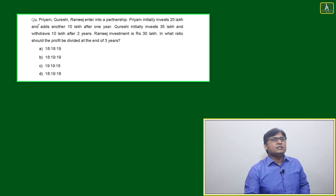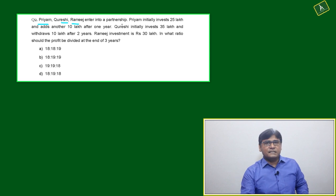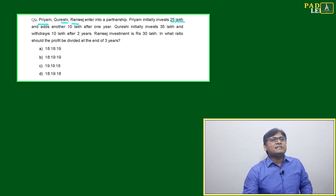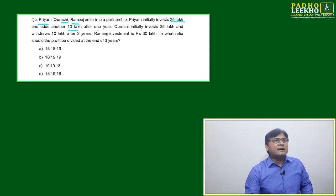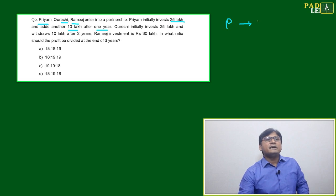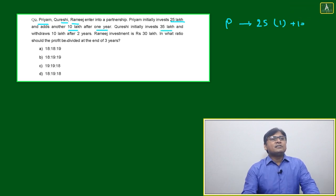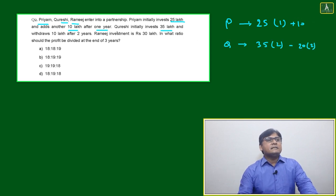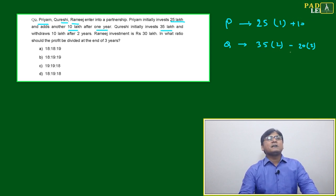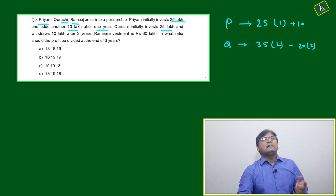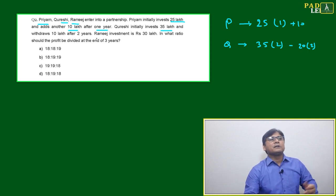Next question on partnership. Priyam Kureshi and Rameesh enter into a partnership. Priyam initially invests 25 lakhs and adds another 10 lakh after one year. Kureshi initially invests 35 lakh and withdraws 10 lakh after two years. This means Kureshi's 35 lakh continues for two years, then after withdrawing 10 lakh, it becomes 25 lakh for the remaining time.